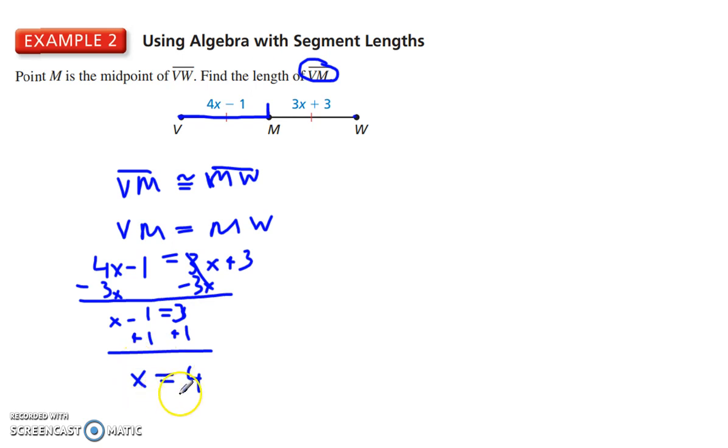Notice they did not ask us what is x? They didn't say find x, they said what is the length of VM. So we're going to take this 4 and plug that in. So 4, and then plug it in here, times 4, minus 1, 4 times 4, minus 1, we have 16, minus 1 gives us 15.